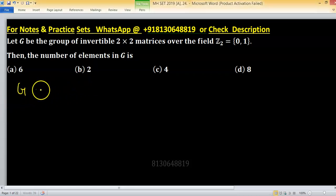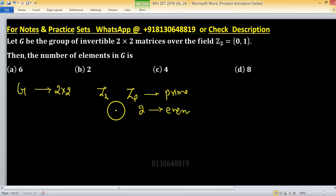Let G be the group of invertible 2 cross 2 matrices over the field Z2. ZP forms a field when P is a prime and 2 is also an even prime. So Z2 will form a field and the number of elements in this field are 2.